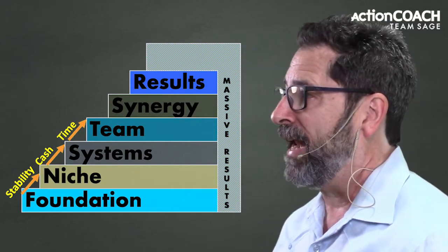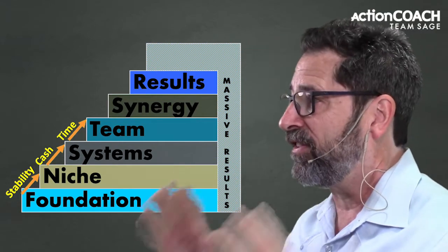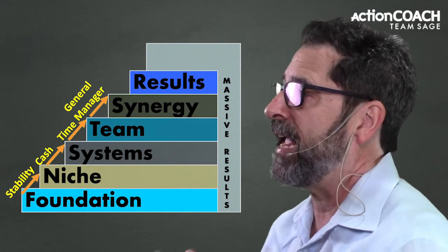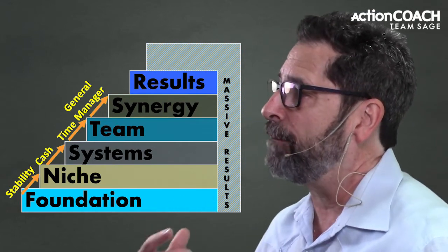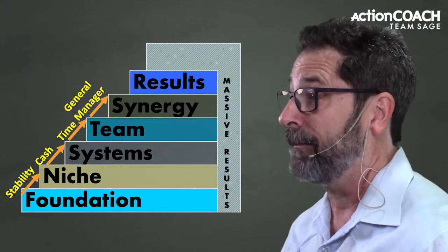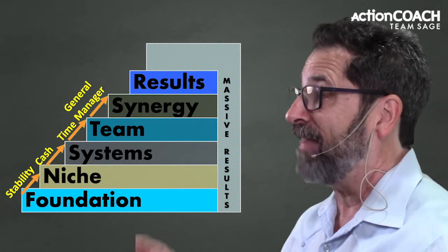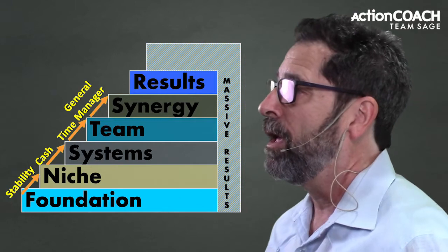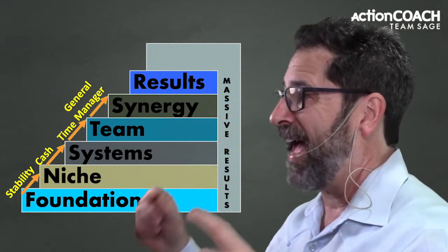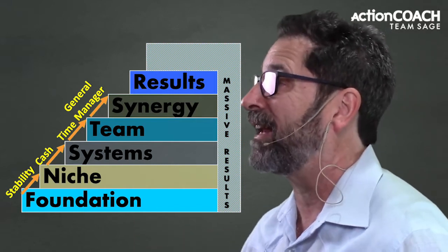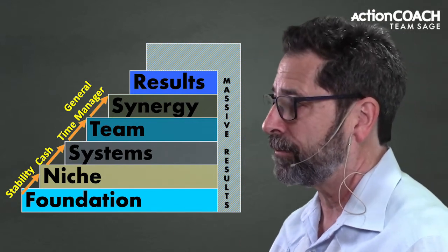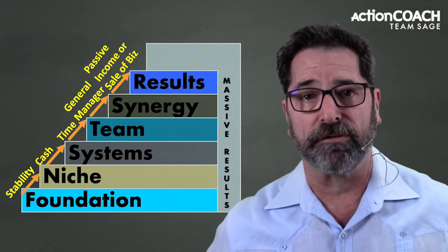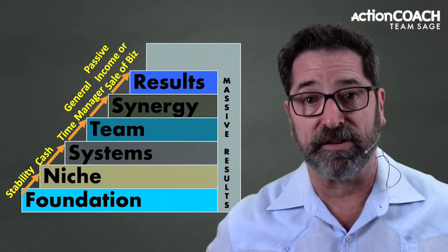At the systems level, we put in all the remaining systems required to take our business to the next level: team. The team level is where we focus on building a team that can run the business as well as — or better than — we can. This takes us into the growth stage, where we have a team running the business, efficient systems, effective marketing we know how to scale, and a solid foundation. We can then turn up the volume and get the results we went into business for.